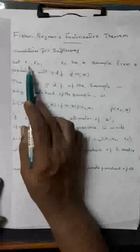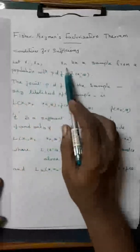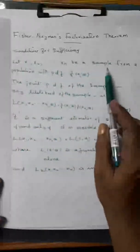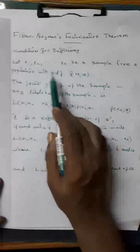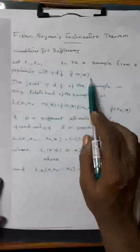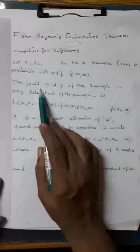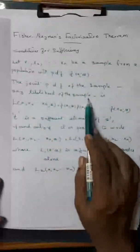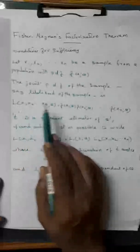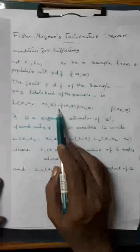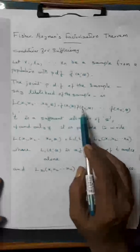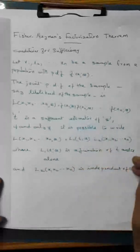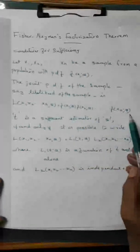Let x1, x2, ..., xn be a sample from a population with pdf f(x;θ). The joint probability density function of the sample, say likelihood of the sample, is L(x1,x2,...,xn;θ) equals f(x1;θ) times f(x2;θ) times ... times f(xn;θ).